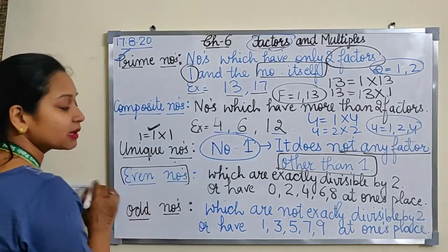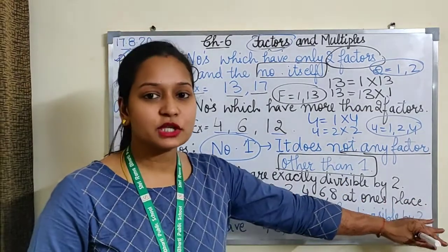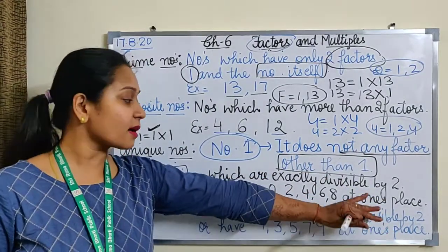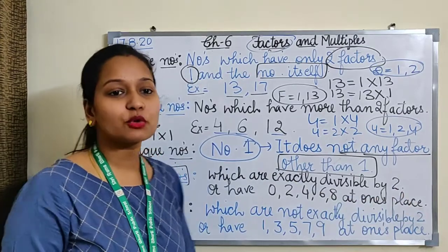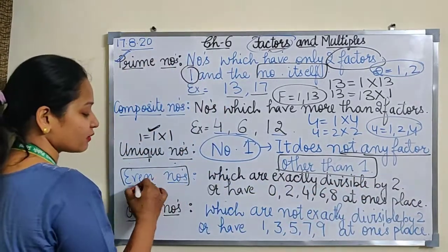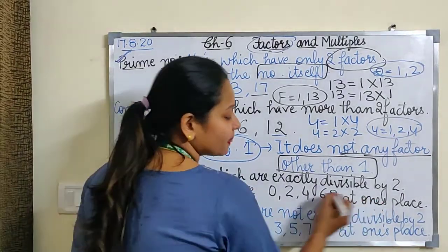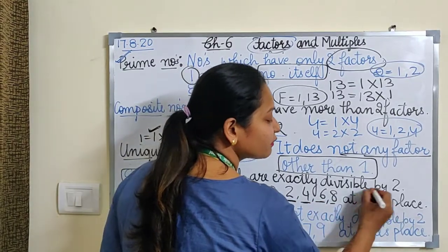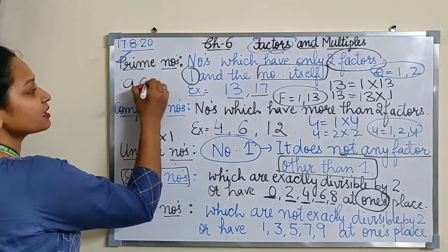Next type of numbers are even numbers. The numbers which are exactly divisible by 2. In previous class I have told you exactly divisible means it divides completely and the remainder comes out to be 0. The simple trick to find even numbers is the numbers which are having 0, 2, 4, 6, 8 at ones place. All those numbers are called even numbers.